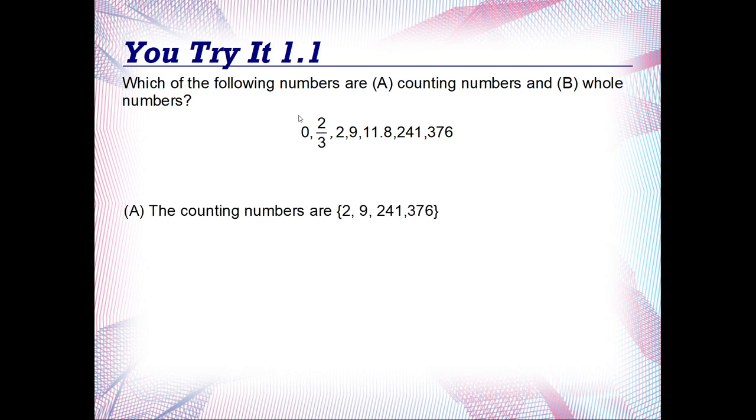So the counting numbers we have in our list are 2, 9, 241, and 376. And the whole numbers are the counting numbers and zero. And zero just happens to be in our list. So the whole numbers are 0, 2, 9, 241, and 376.